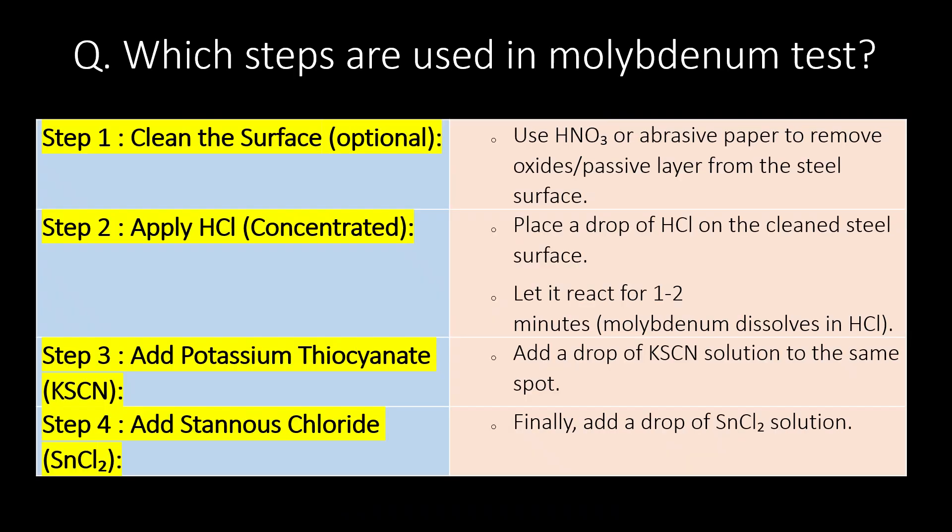Which steps are used in the molybdenum test? Step 1: clean the surface. Step 2: apply HCl. Step 3: add potassium thiocyanate. Step 4: add stannous chloride.